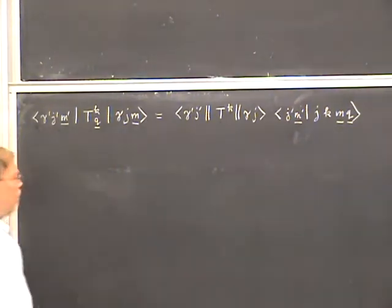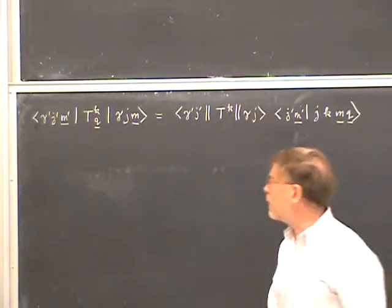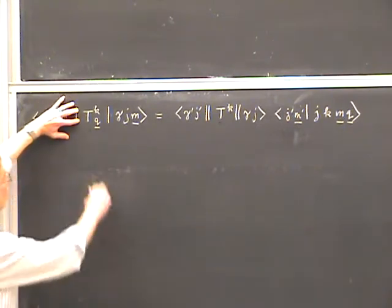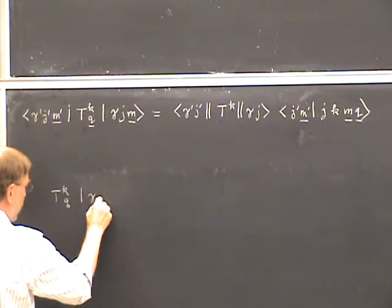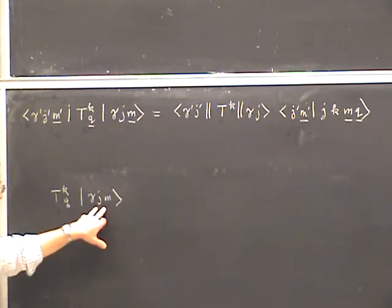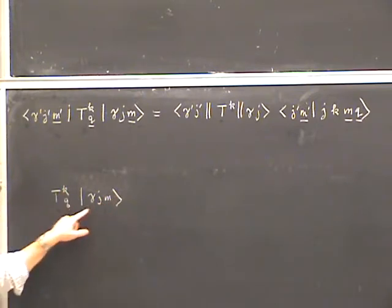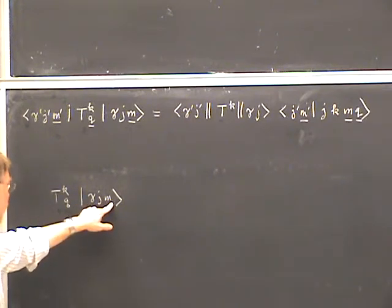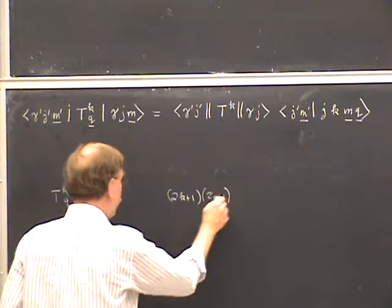I'm not going to prove the Wigner-Eckhart theorem, mainly because it takes too long to write out. The proof is in the notes, but I'll give you a general idea of what's involved. To get the general idea, let's suppress the prime bra and just look at the irreducible tensor operator T_KQ times the ket gamma-J-M. We can describe this product as an operator with angular momentum quantum numbers K and Q multiplied times a ket with quantum numbers J and M.